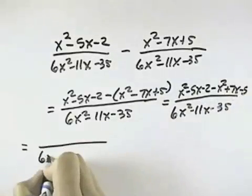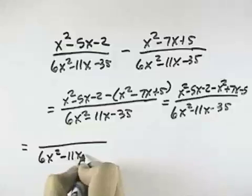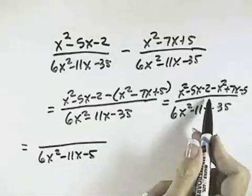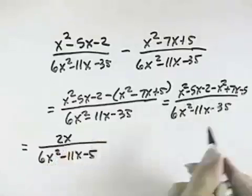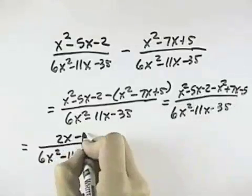Combining like terms, we're still over our common denominator. And the x squareds cancel. Negative 5x and positive 7x is 2x. Negative 2 minus 5 is minus 7.